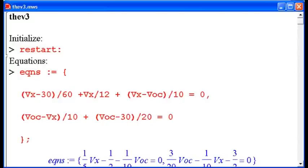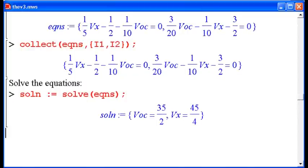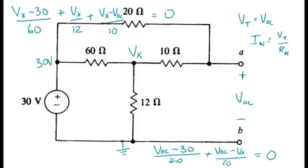So, I have placed those nodal equations into Maple. And the solution says that the open circuit voltage is 35 divided by 2 volts, which we can then use as the result 17.5 volts.